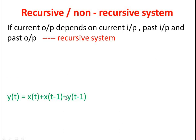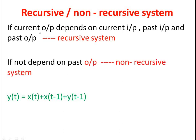For a non-recursive type of system, the current output does not depend on the past output — it depends only on the current input as well as past input. Recursive means it should contain three terms: current input, past input, and past output. Whereas for a non-recursive system, it may contain only two items — present input and past input — and it should not contain past output in the equation.